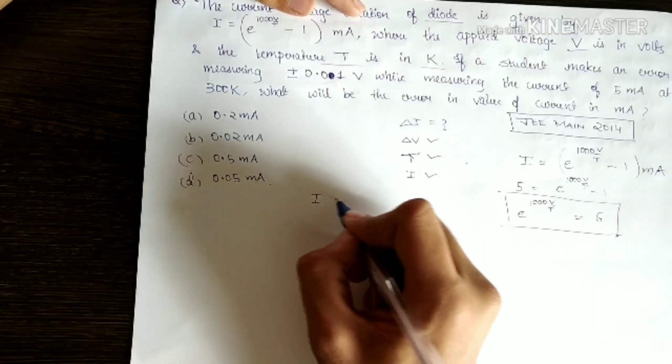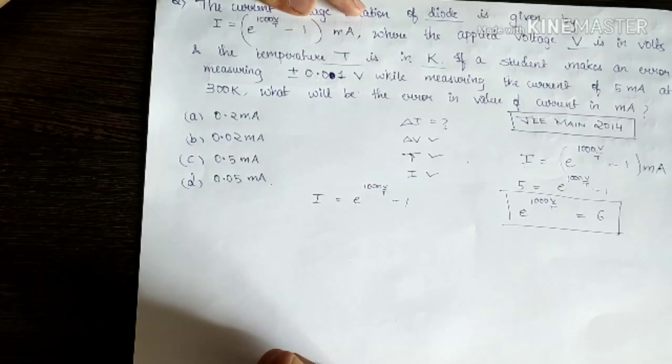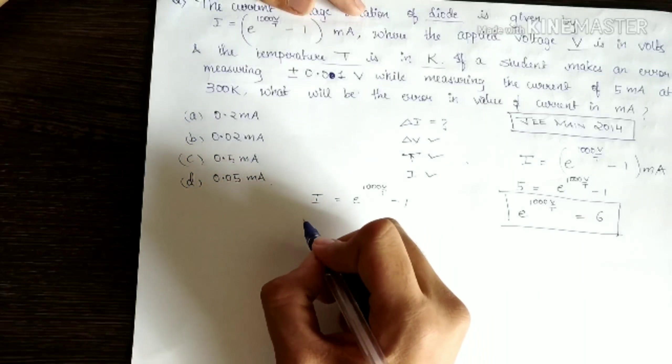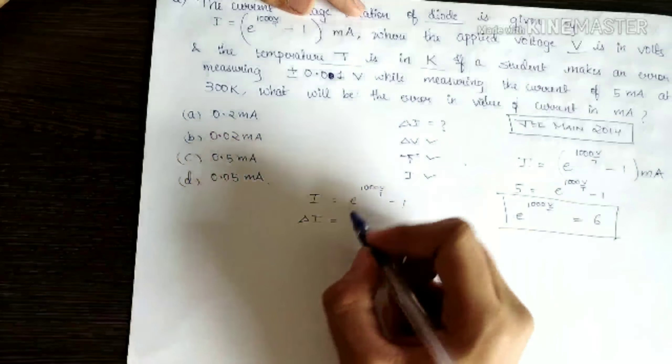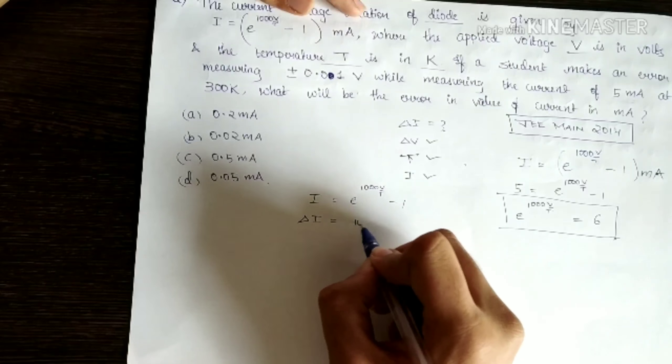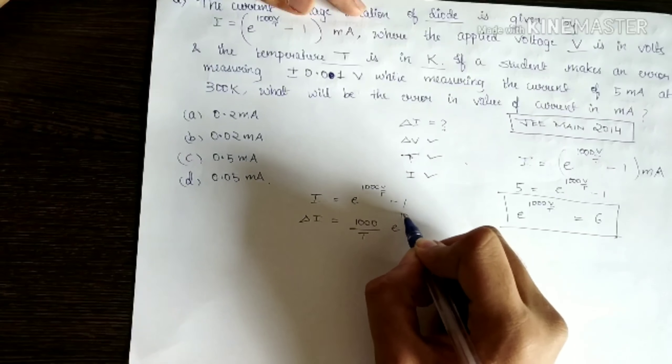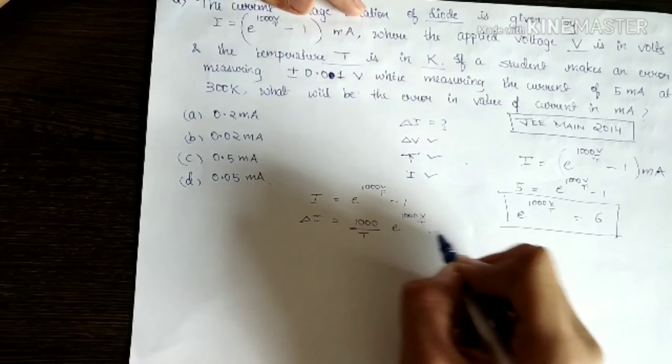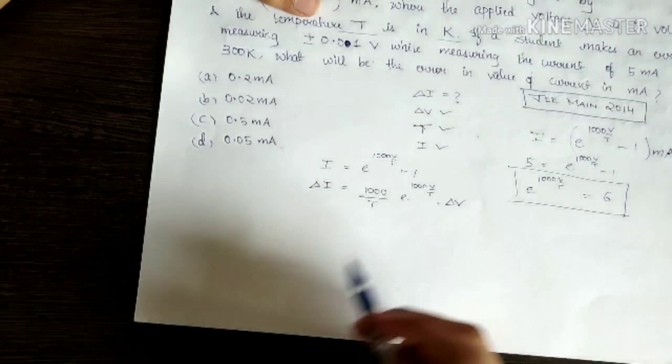Now, I will take the same equation: I = e^(1000V/T) - 1. What do I want? I want delta I, right? So let me differentiate. Delta I = (1000/T) × e^(1000V/T) × delta V. This is what I will be getting. I need this value.